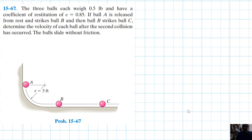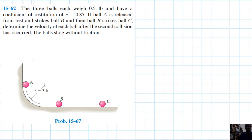The balls slide without friction. So we have the first ball A striking B, and then later B strikes C. We need to find the velocity of A after it strikes B, the velocity of B when it strikes C, and the velocity of C as well. This problem is from Engineering Mechanics and Dynamics. The ball slides from a particular height, converting potential energy to kinetic energy as it falls.